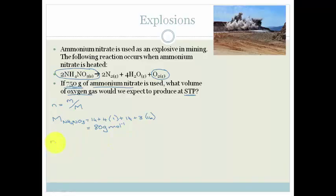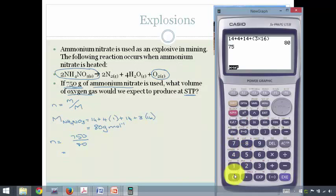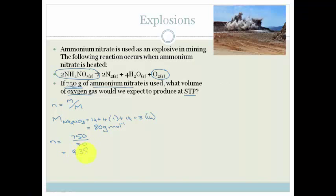So the molar mass of ammonium nitrate is 80 grams per mole. So to get the number of moles, we're going to go 750 divided by 80, which equals 750 divided by 80, and that's going to give us 9.38 moles. So we have got 9.38 moles of ammonium nitrate. But we don't have 2 moles.